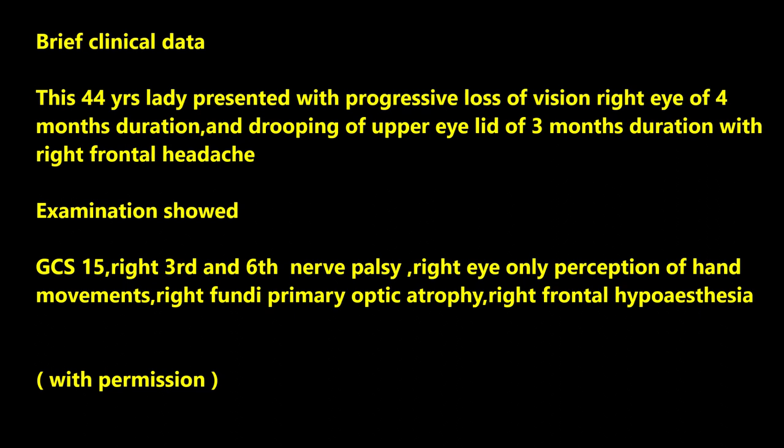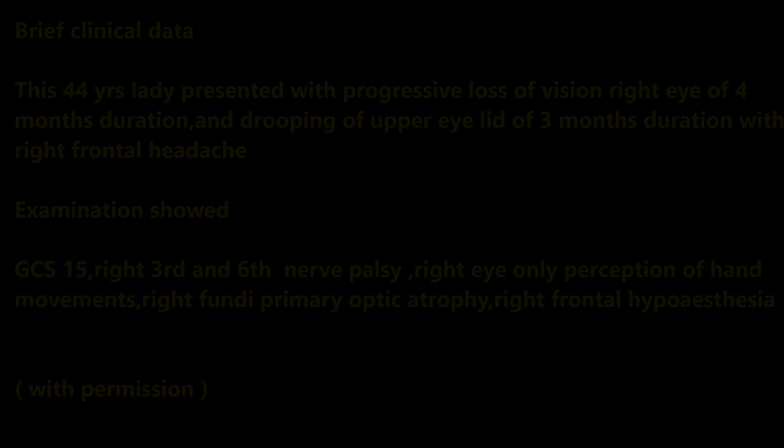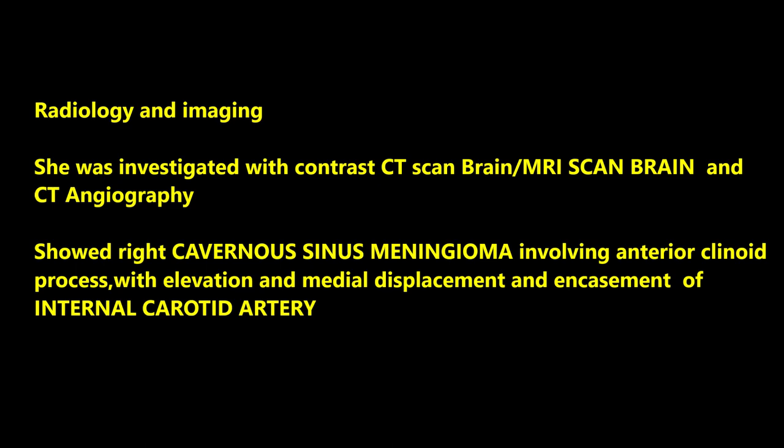Examination showed Glasgow Coma score 15. She had right third and sixth nerve paresis, only perception of light on the right side, and primary optic atrophy on the right fundus.